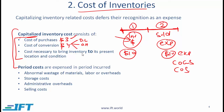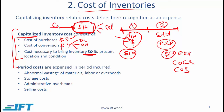The cost necessary to bring inventory to its present location and condition is also capitalized. So if you are creating inventory and need to put that inventory in a particular showroom — which is the location from where you make your sales — the cost of taking the inventory to the showroom is also capitalized. However, any cost associated with shipping from the showroom to your customer is not capitalized. The cost of transporting raw material is also capitalized.